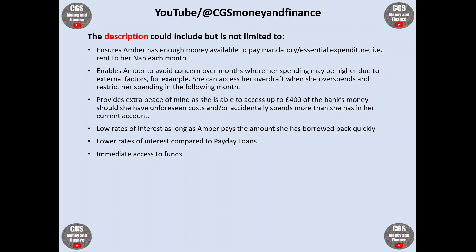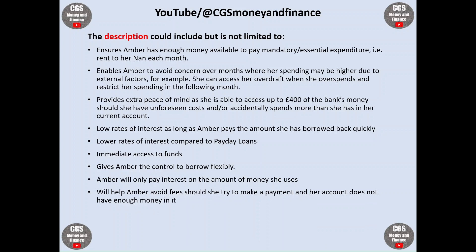Amber has immediate access to funds should she need it. It gives Amber the control to borrow flexibly. Amber will only pay interest on the amount of money she uses. It will help Amber avoid fees should she try to make a payment and her account does not have enough money in it.